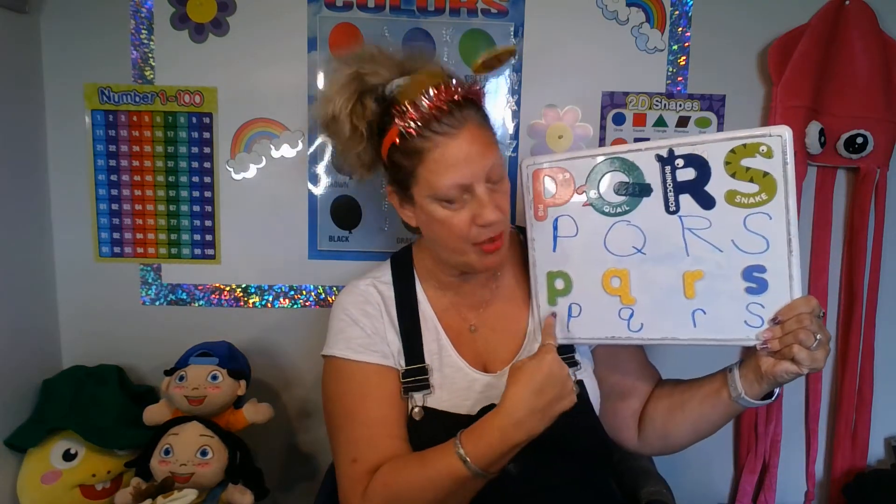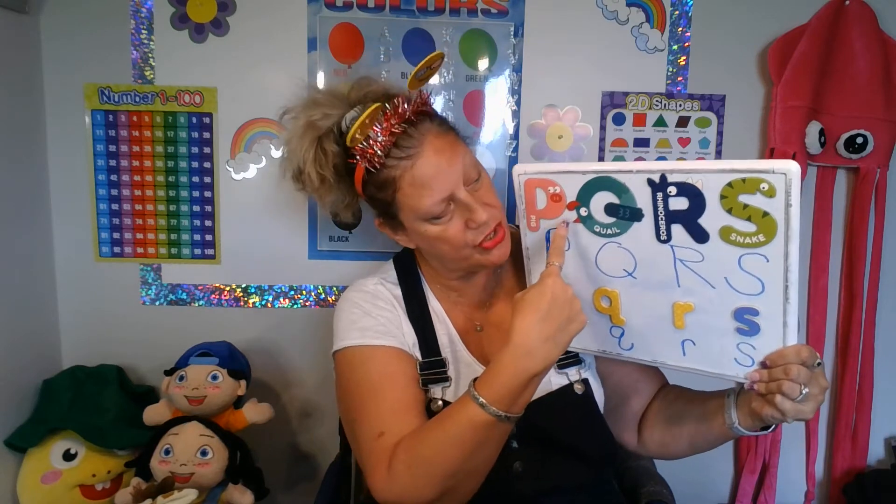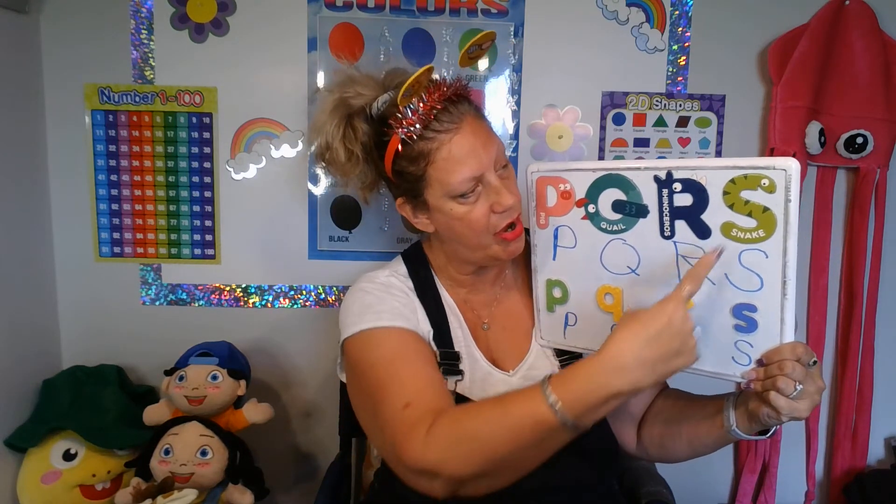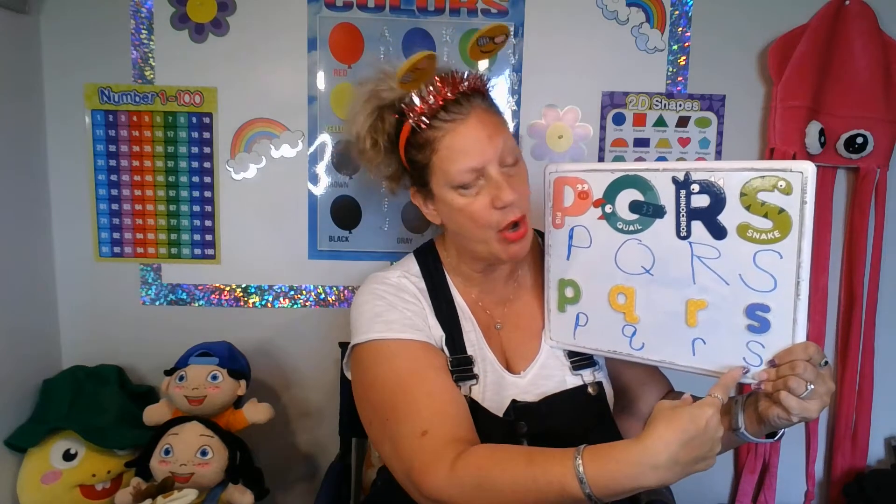Let's review. Big P, small P. Big Q, small Q. Big R, small R. Big S, small S. Pig, quail, rhinoceros, snake. Very good, good job students. Practice all of your letters, A through S.